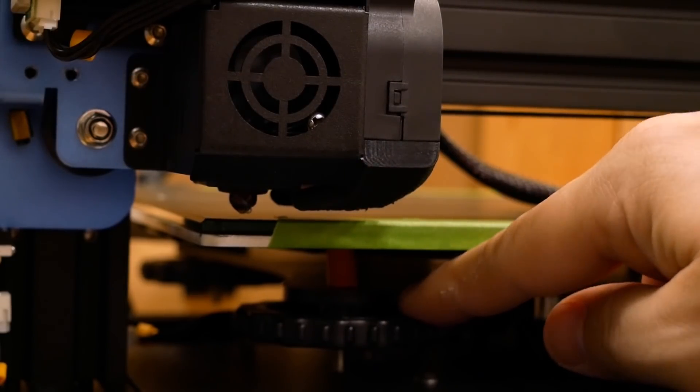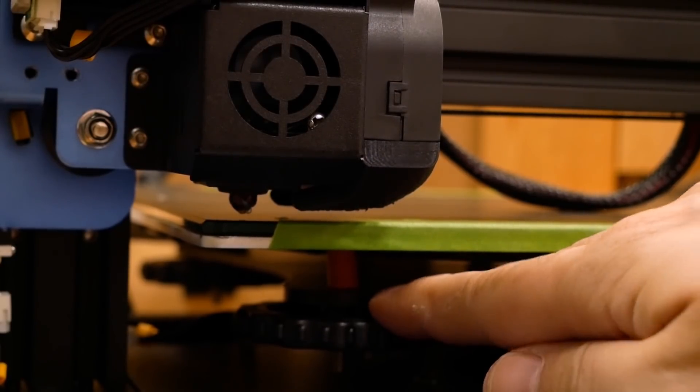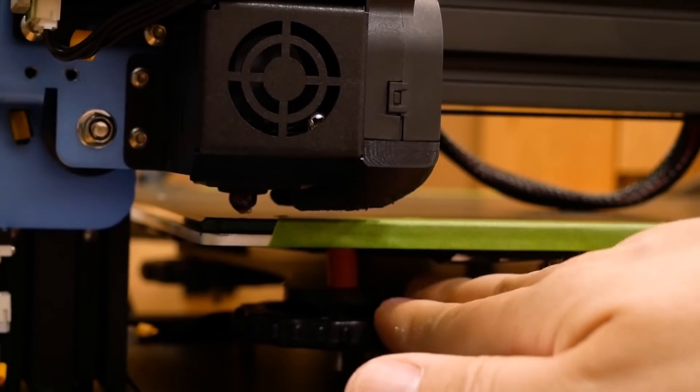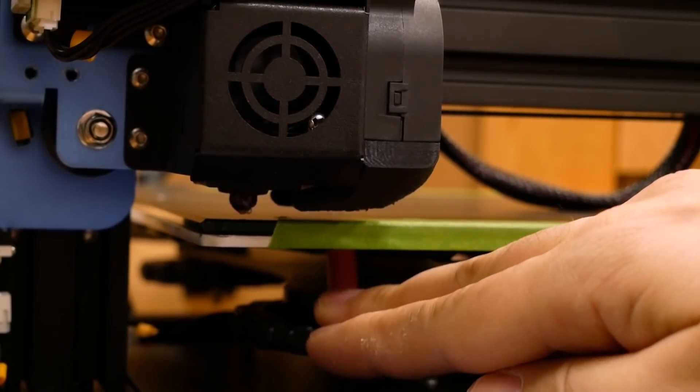The other thing I noticed that might not be obvious the first time you're doing it is as you're turning these wheels—well, these are fully compressed, let me loosen this up a little—as you're turning the wheel to level the bed, if you press down on the wheel, can you see that that's moving the bed?